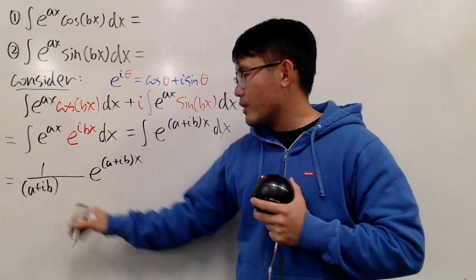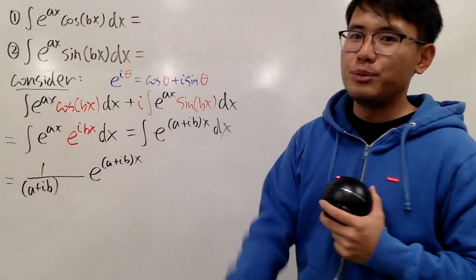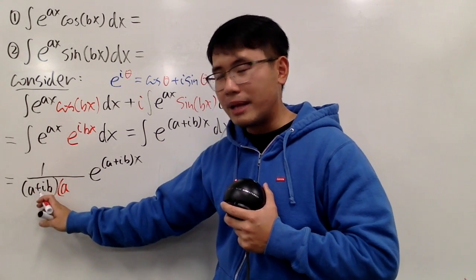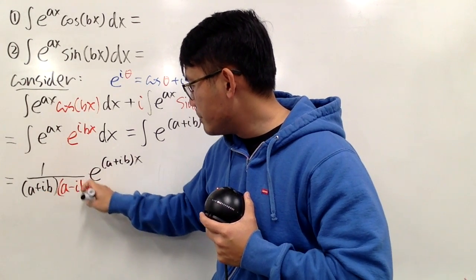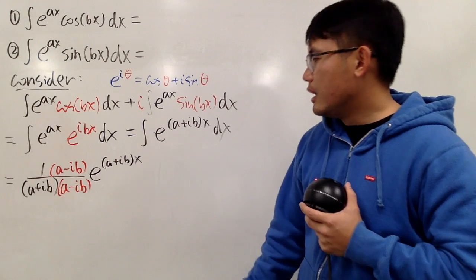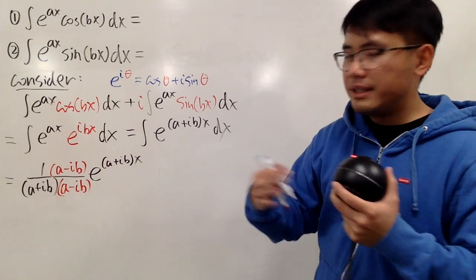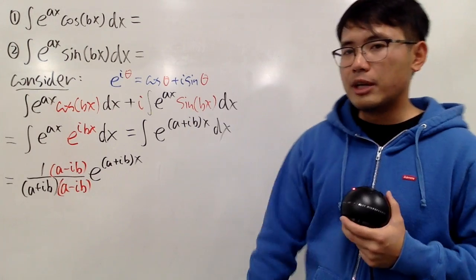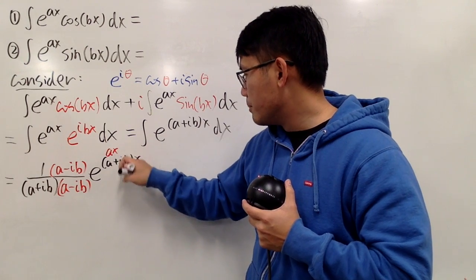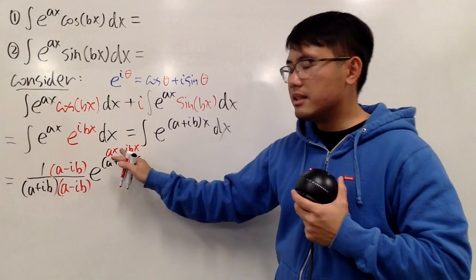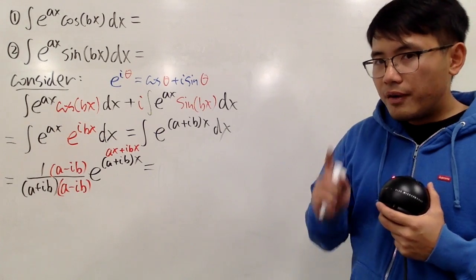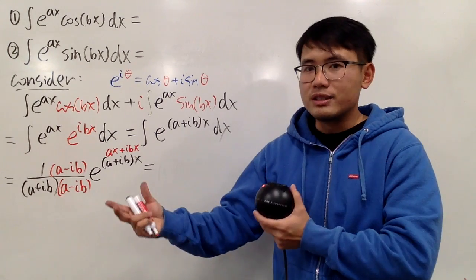To do this, I don't like the complex number in the denominator, so let's multiply the top and bottom by a minus ib — the conjugate. I'll also split out the real and imaginary parts of the exponential. Notice that e to the (a plus ib)x equals e to the ax plus ibx.